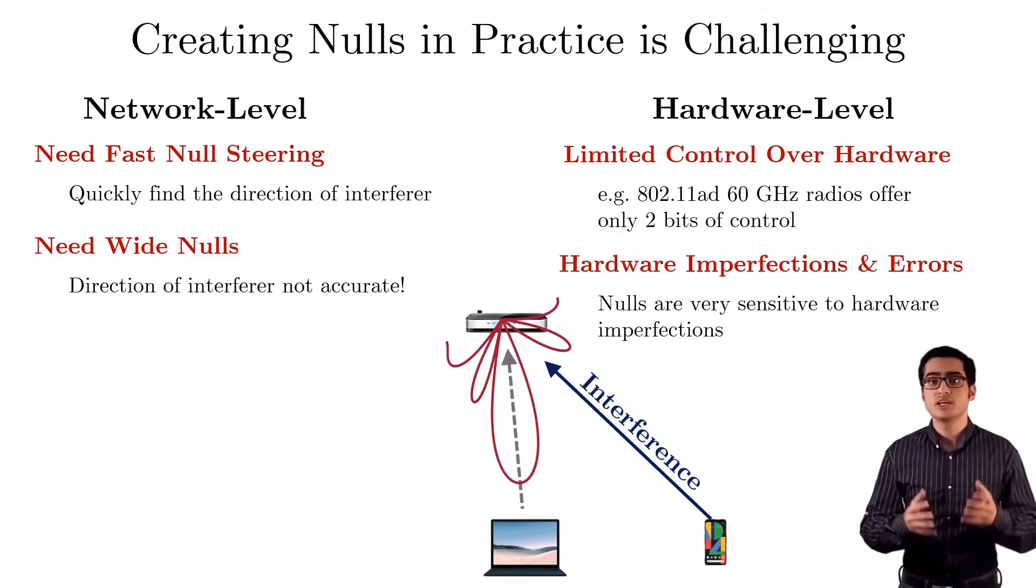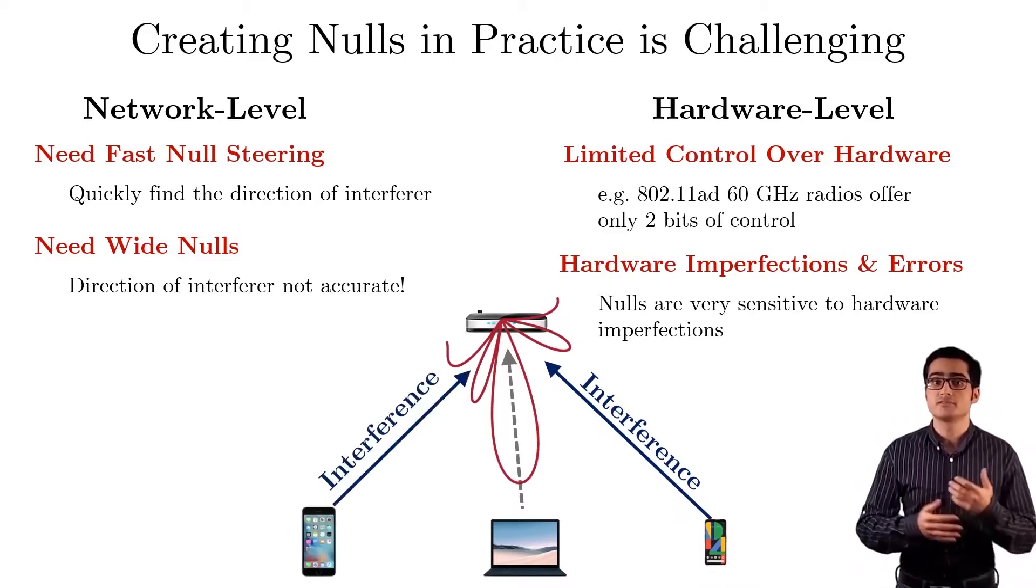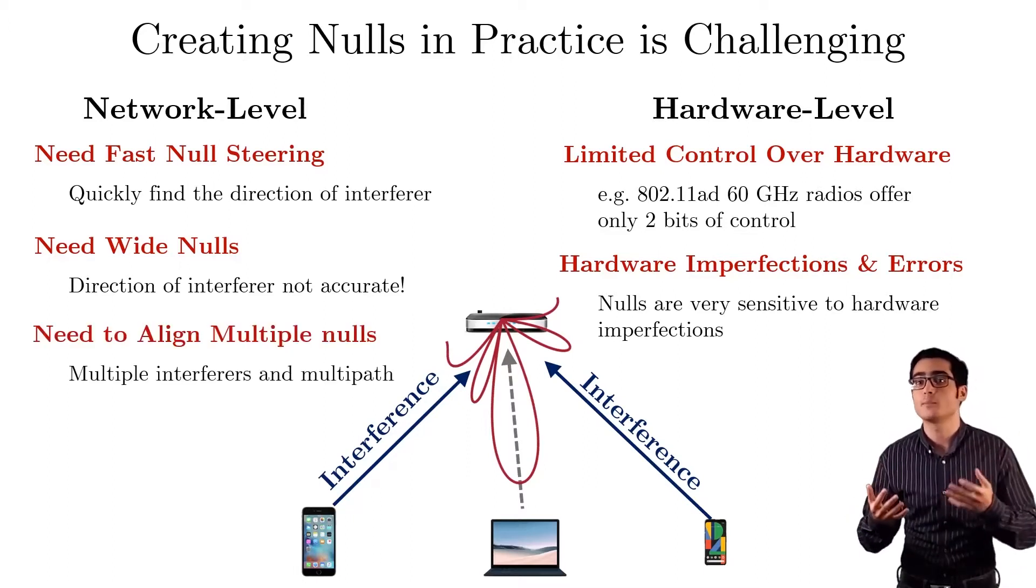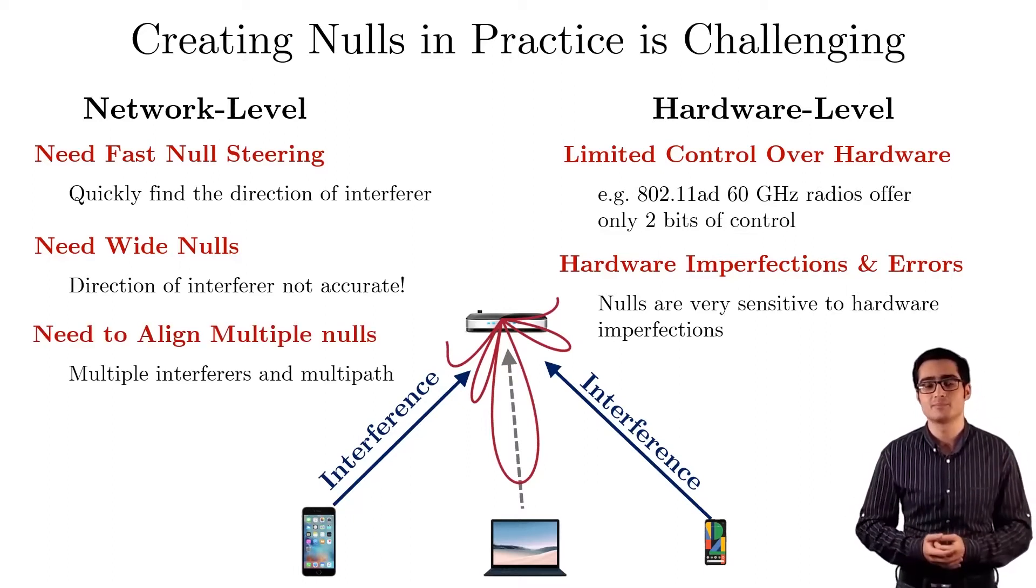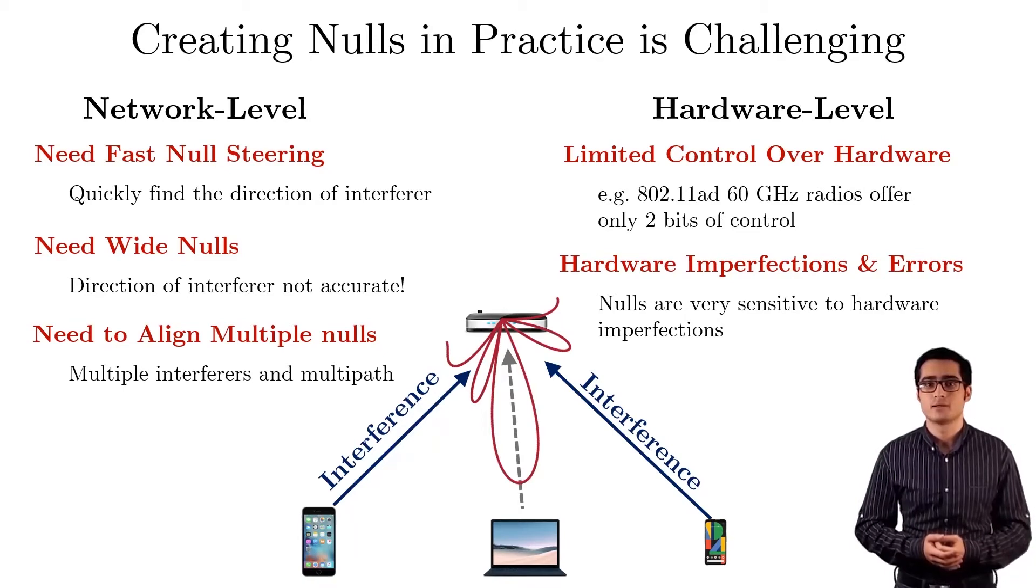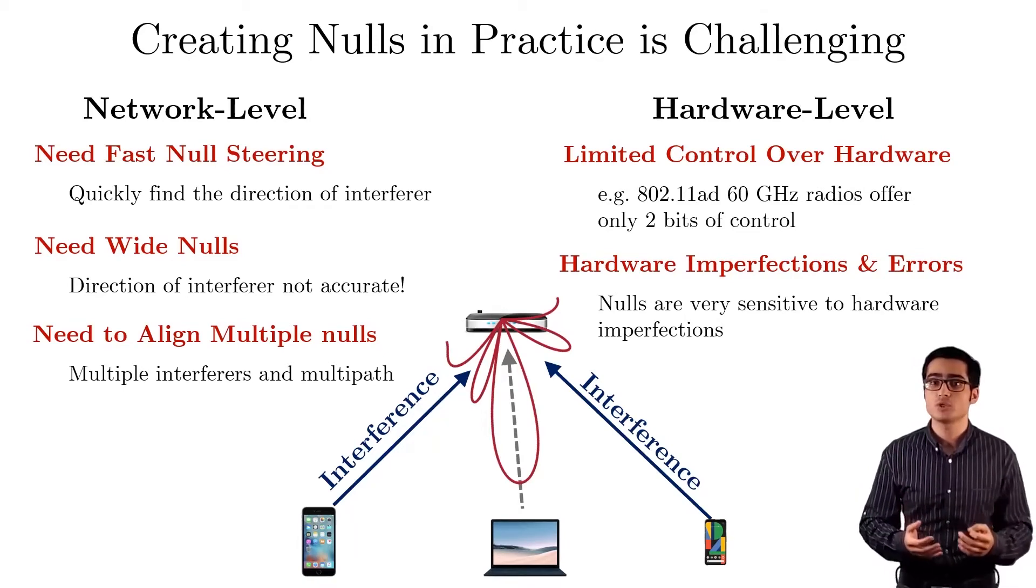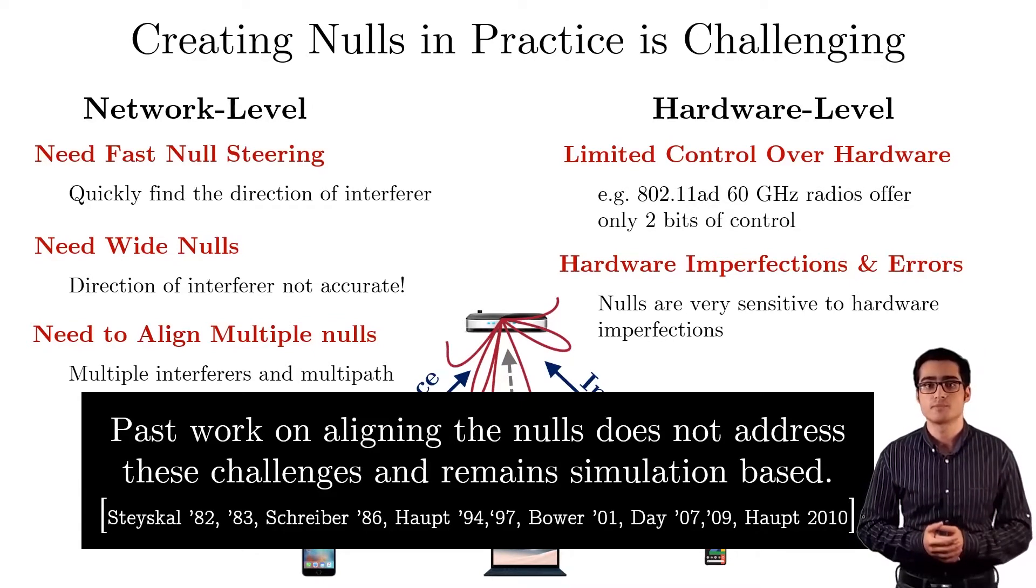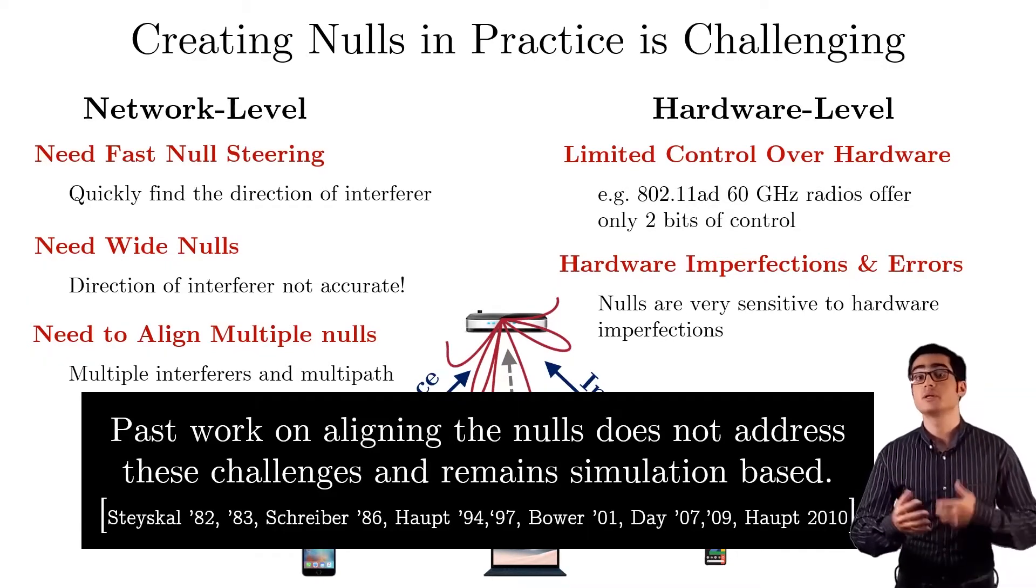Finally, in real networks, there could be multiple interferers or multipath reflections, and hence we need a method to create and align multiple nulls at the same time. Unfortunately, past work does not address the above practical hardware and network challenges, and as a result remains simulation-based.